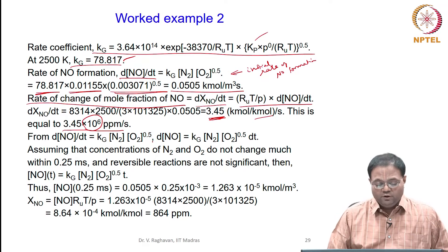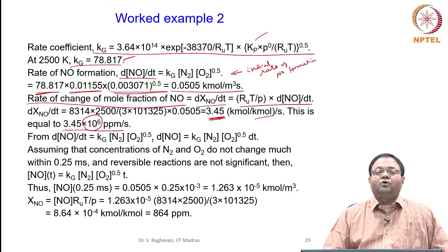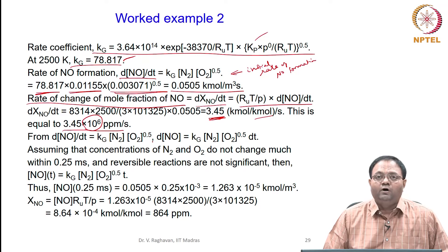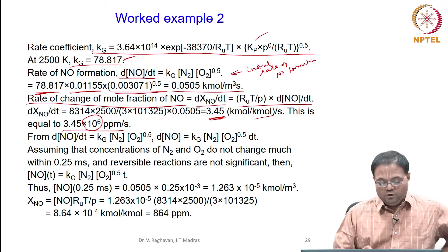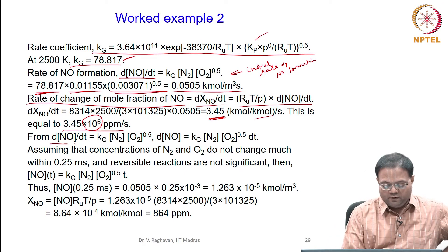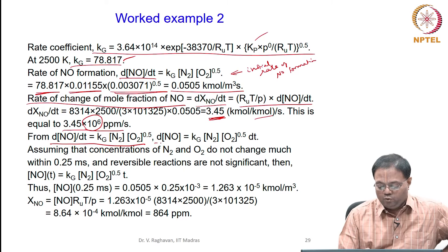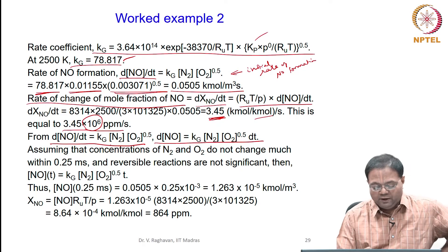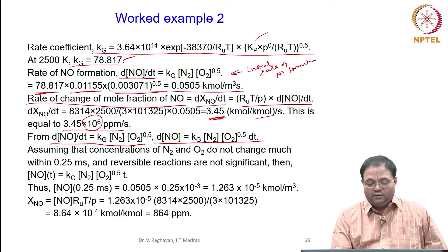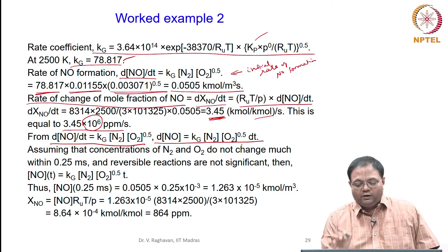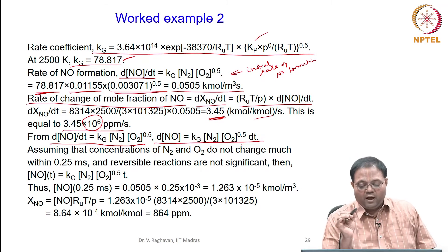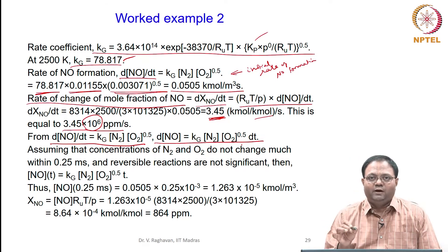For the second part — concentration of NO produced in 0.25 milliseconds — we integrate the rate equation. Rearranging, d[NO] equals Kg × [N₂] × [O₂]⁰·⁵ × dt. Since temperature is fixed at 2500 K, Kg is constant.